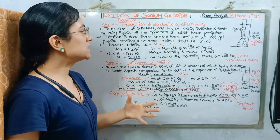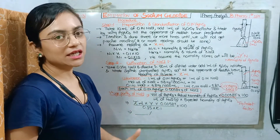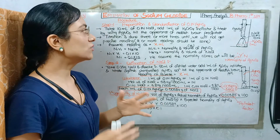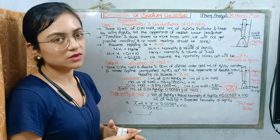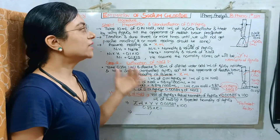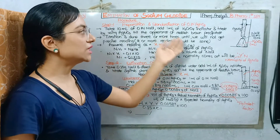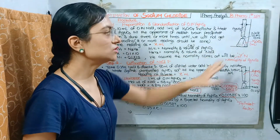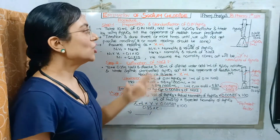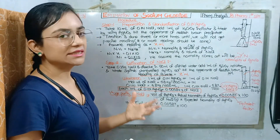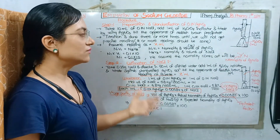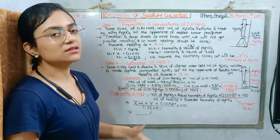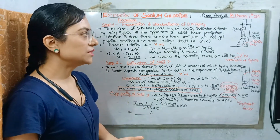First of all, we will take a conical flask. Then we will add 1 ml of potassium chromate indicator. After adding both, we will titrate from silver nitrate solution until a reddish brown precipitate appears.